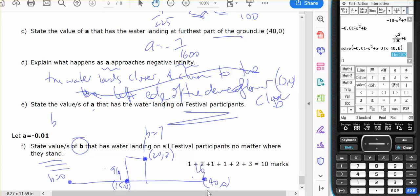So b can go from 0 up to 9 on 4, union with 7, up to 16. So they're the two sets of values of b that have the water landing here and here.